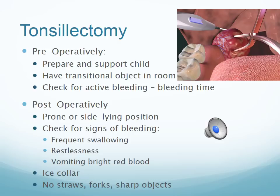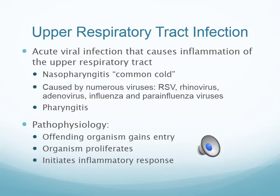Upper respiratory tract infection — nasopharyngitis, also known as the common cold — can be caused by many things in children, most commonly RSV or respiratory syncytial virus. This can affect different kids differently: some just get a cold and are fine, others get admitted to the hospital and need intubation, and others do not make it. So we can never predict how these viruses and bacteria will affect our children. The best thing to do is prevention and early diagnosis, management, and treatment.